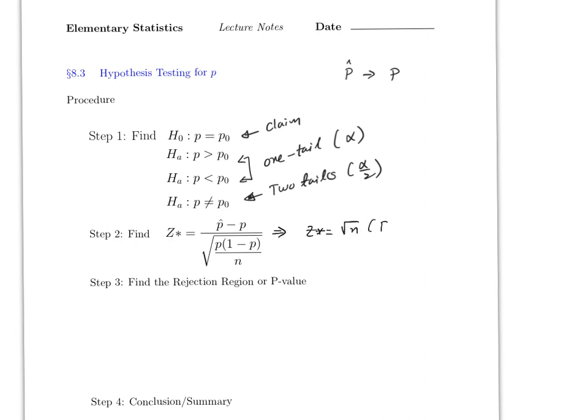The square root of n, and this is p-hat minus p divided by the square root of p times one minus p.